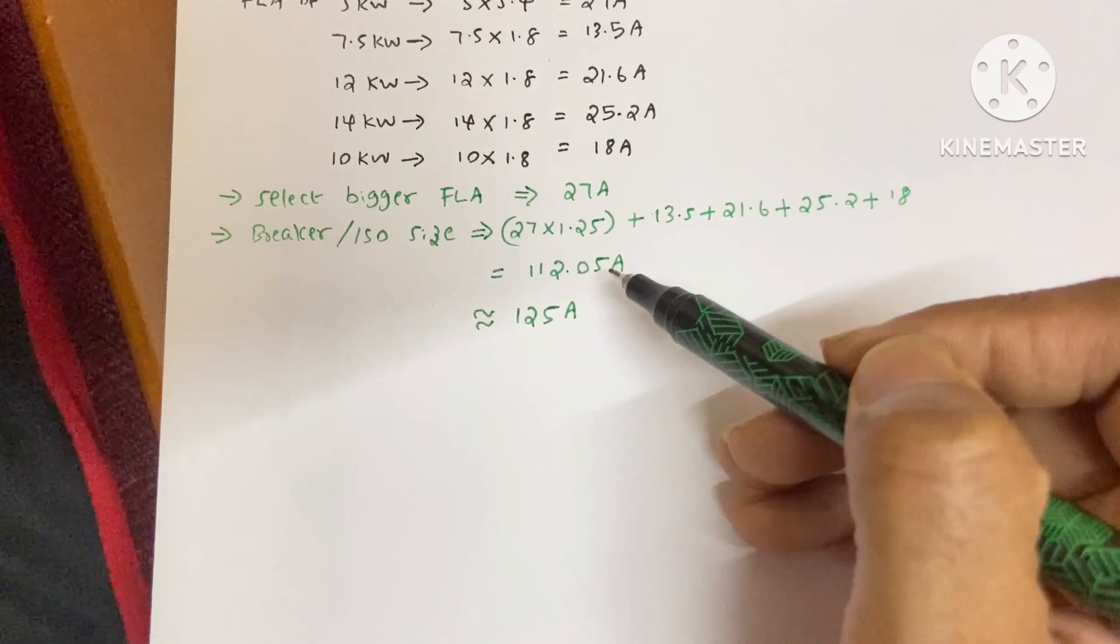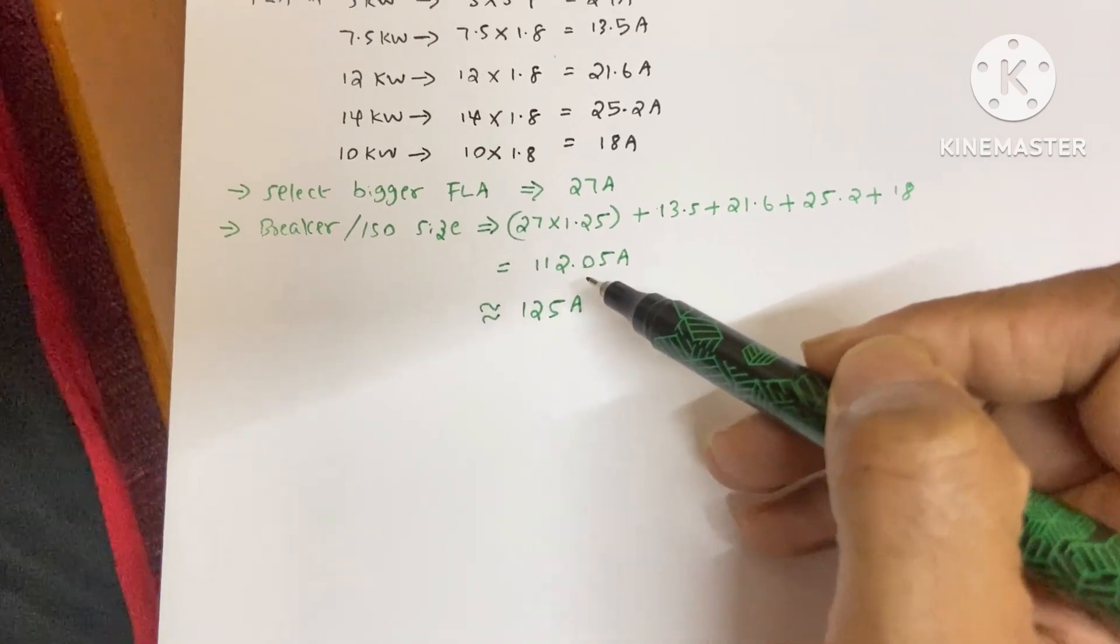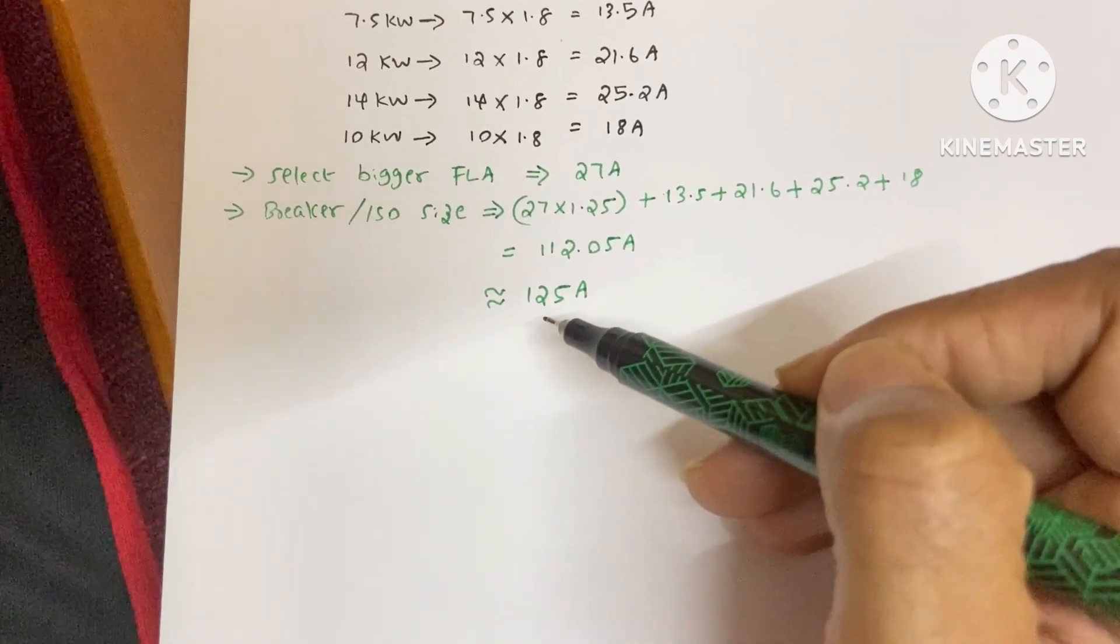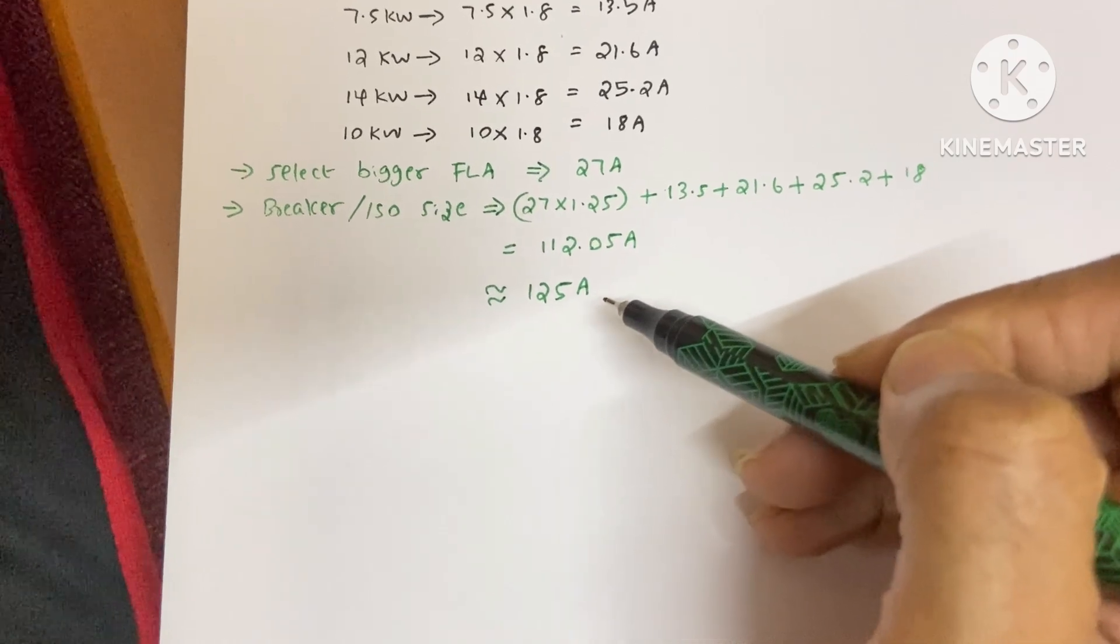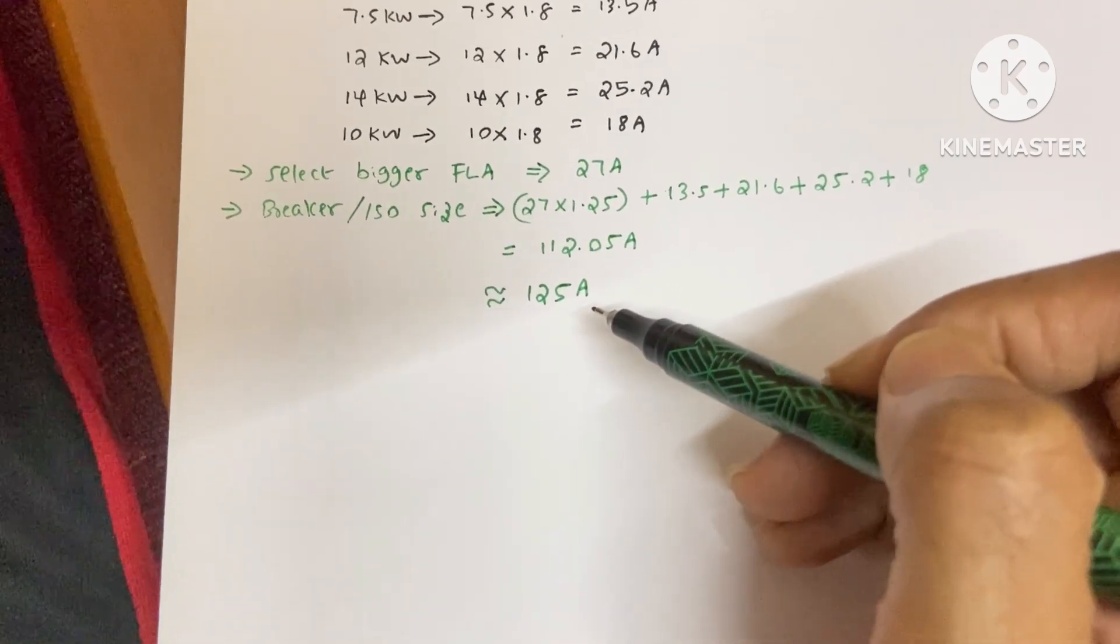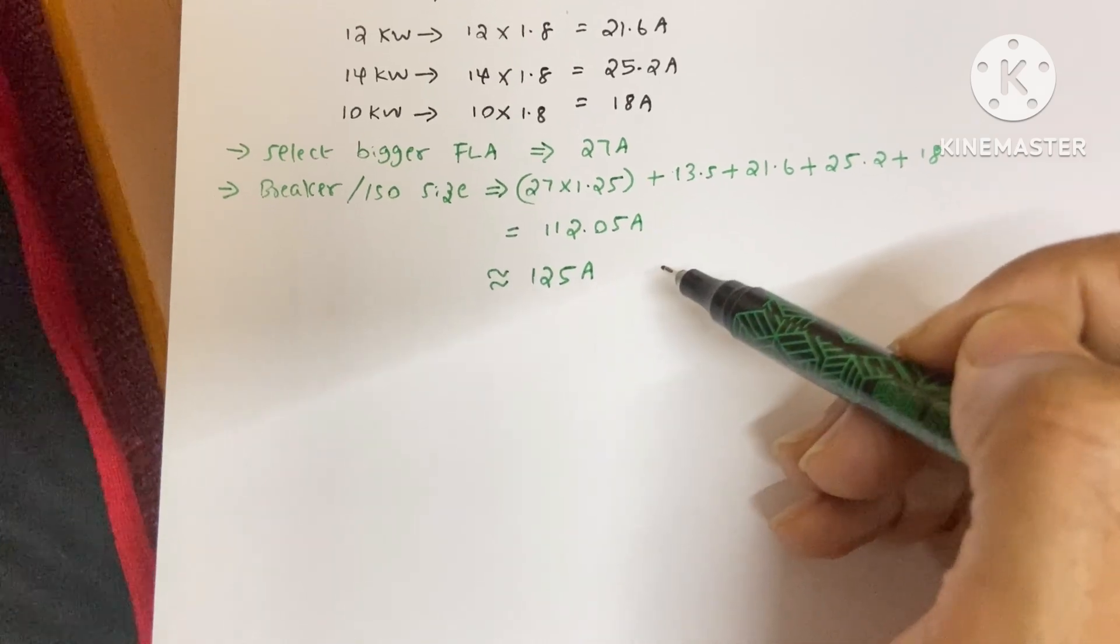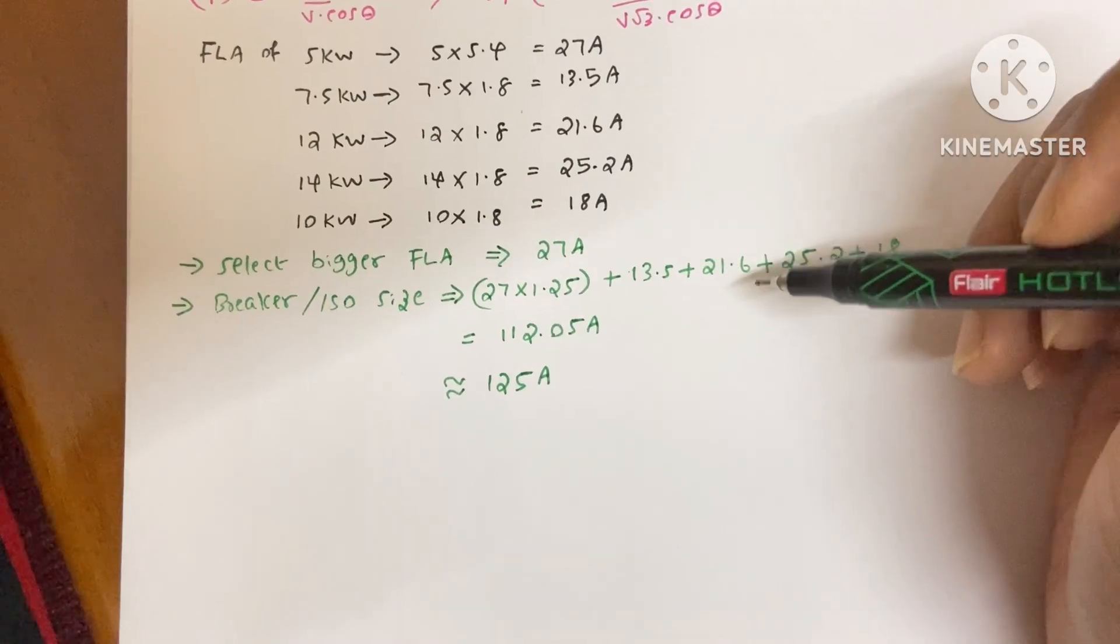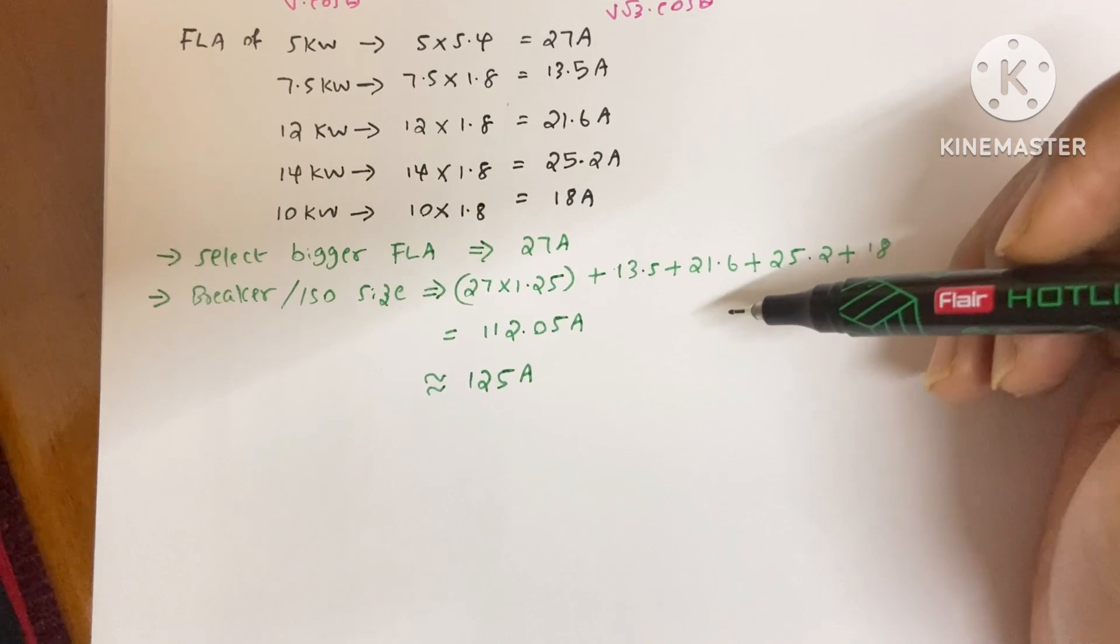This size of the breaker is not available, so the next higher size is 125 ampere. So here you can use 125 ampere of MCCB or isolator. And one important thing you need to remember.